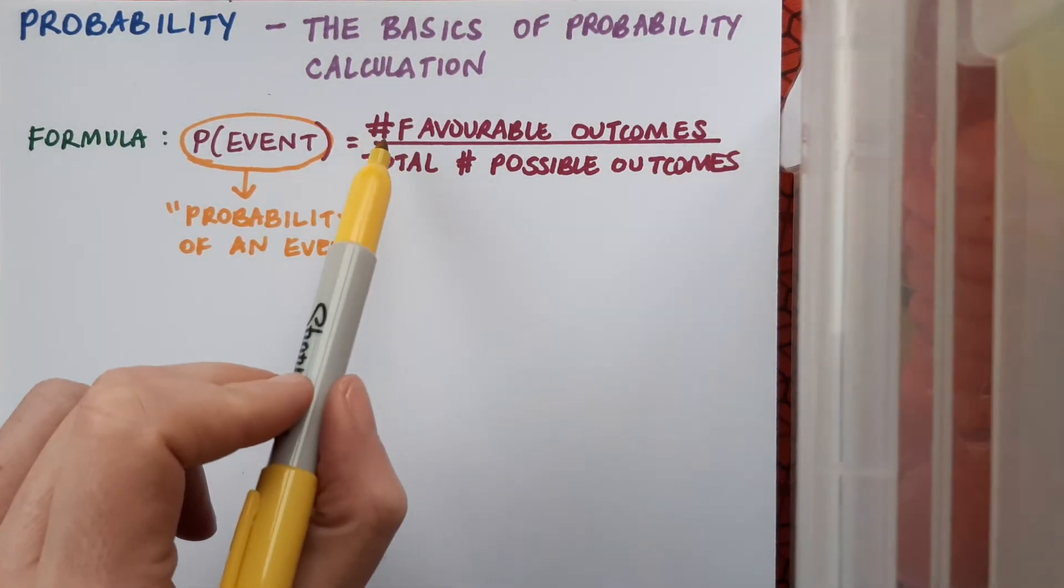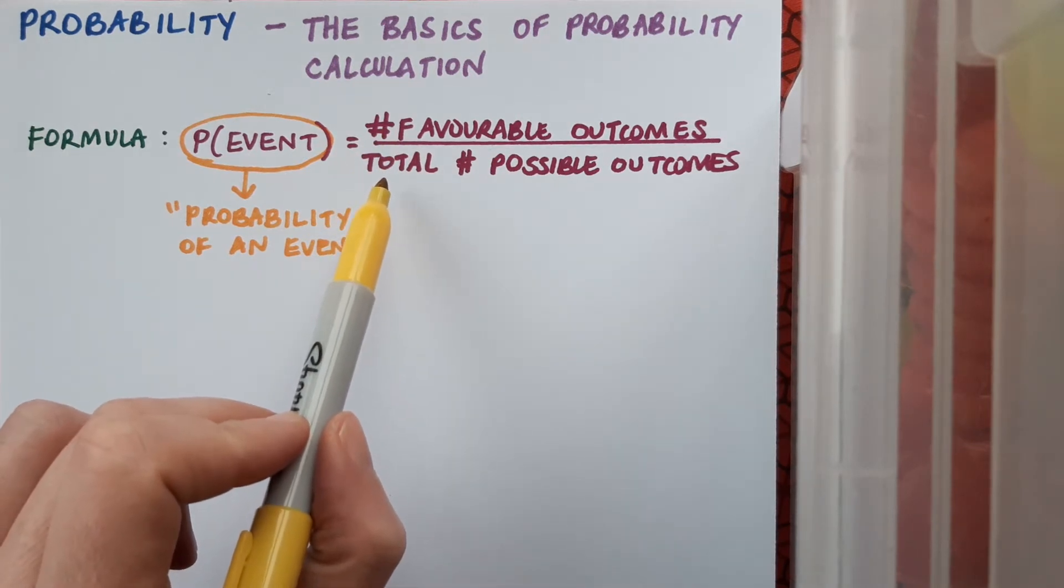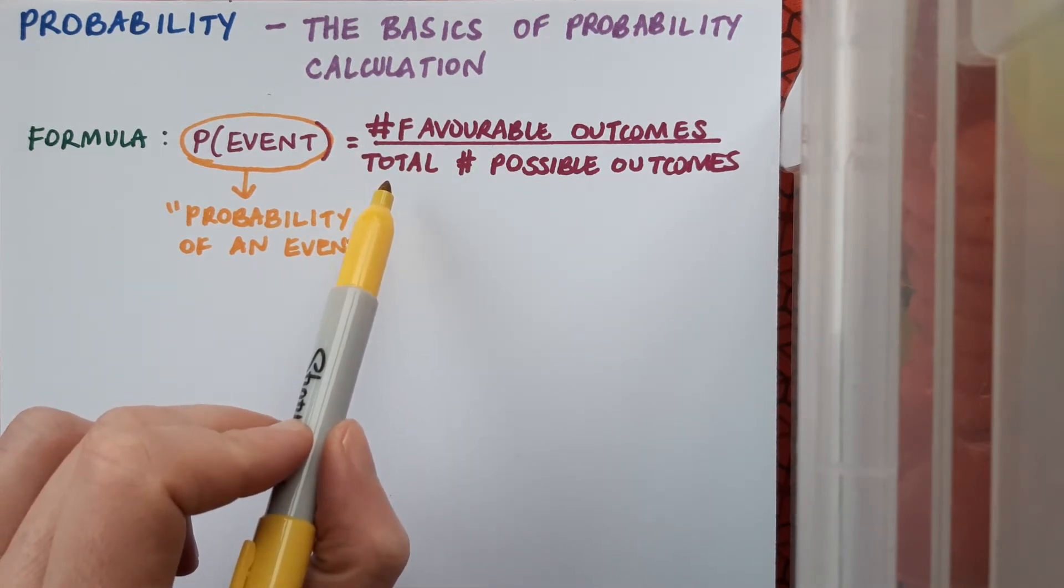In our formula, the favorable outcomes are the things that we want to happen, and the total number of possible outcomes are all the things that could happen.